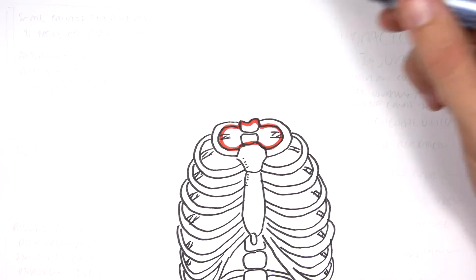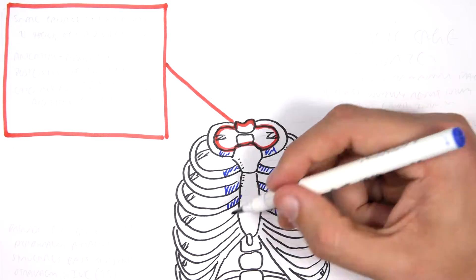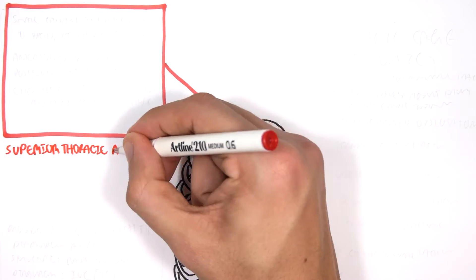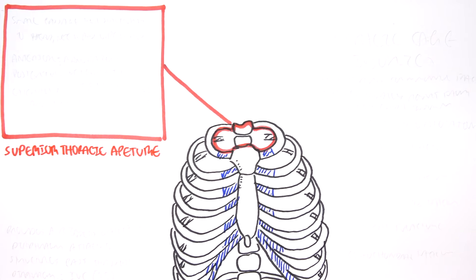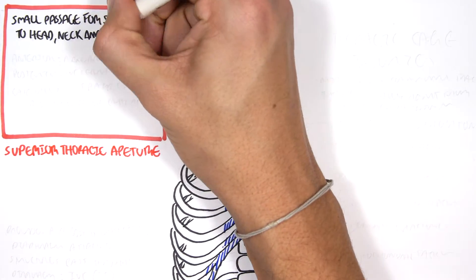So here is the anterior view of the thorax. This here is known as the superior thoracic aperture, and many important structures pass through here. The superior thoracic aperture is a small passage for structures from the thorax to the head, neck, and upper limbs.